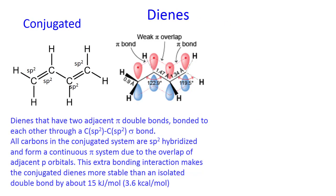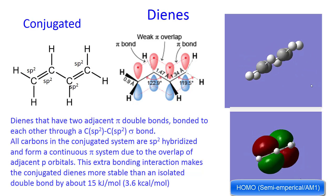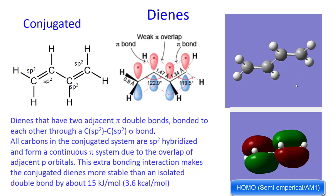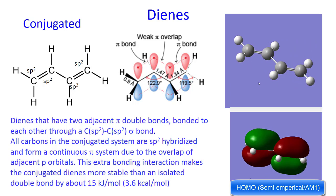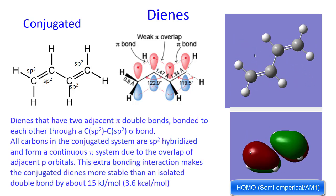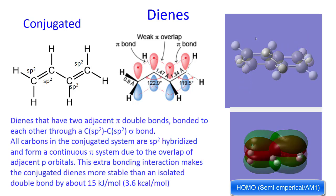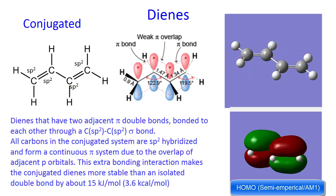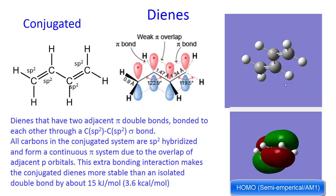Conjugated dienes are dienes that have two adjacent pi bonds bonded to each other through a carbon sp2-sp2 sigma bond. All carbons in the conjugated system are sp2 hybridized and form a continuous pi system due to the overlap of the adjacent p orbitals.